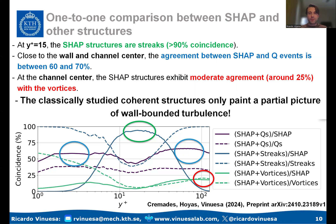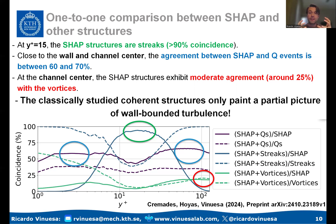These results send a pretty interesting message: the classical structures were not completely wrong — they obviously describe the flow and explain part of it in different regions — but none of them gave a complete description. The classically studied structures were only painting a partial picture of wall-bounded turbulence. With explainable deep learning, we now have an objective way to study turbulence that can yield completely new insights into the fundamental mechanisms of wall-bounded turbulence. We're very excited and analyzing many more configurations to come.